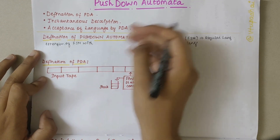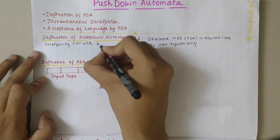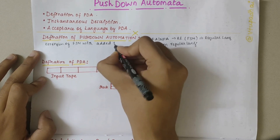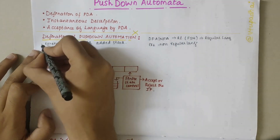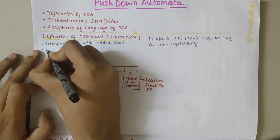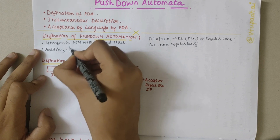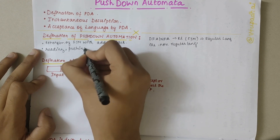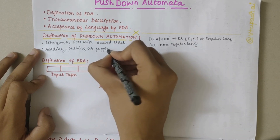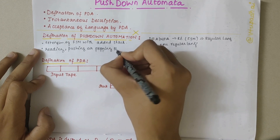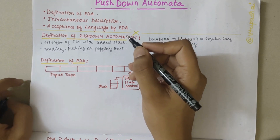In PDA we make use of stacks — a stack is added. In the stack we can perform various operations: reading the elements in the stack, pushing elements onto the stack, or popping elements or characters from the stack.